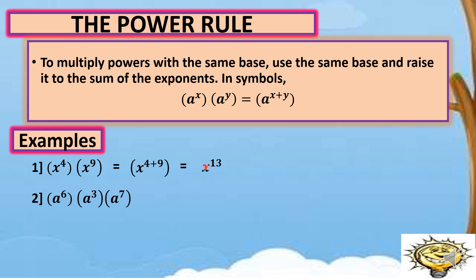For number two, we have three terms: a raised to 6 times a raised to 3 times a raised to 7. As you can see, they still have the same base, which is letter a. So we copy a and add their exponents: a raised to 6 plus 3 plus 7. So 6 plus 3 plus 7 is equal to 16. Our final answer is a raised to 16.